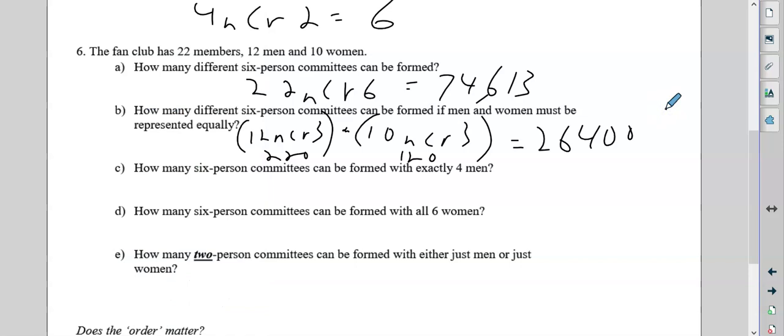How many six-person committees can be formed with exactly four men? So again, from the 12 men, NCR, we're picking four. That means from the 10 women, we're picking two. And again, we're going to multiply these. So we're going to do it the same way. Get your two numbers if you want and multiply, or just enter it all with parentheses. But when you do this, you'll get 22,275.